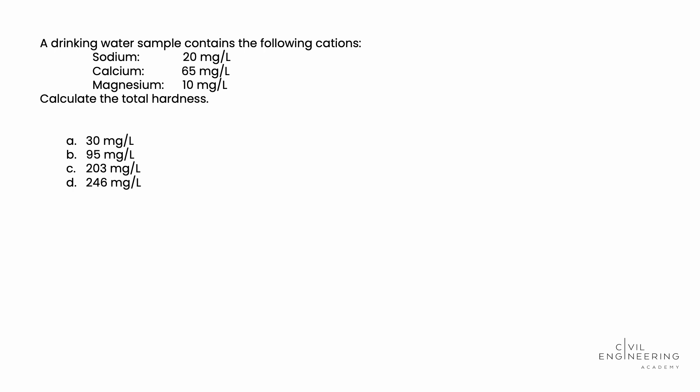A drinking water sample contains the following cations: Sodium at 20 mg per liter, Calcium at 65 mg per liter, Magnesium at 10 mg per liter. Calculate the total hardness.